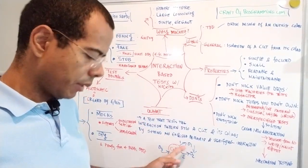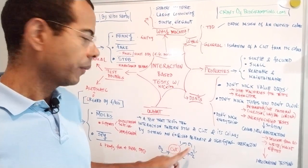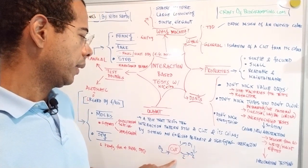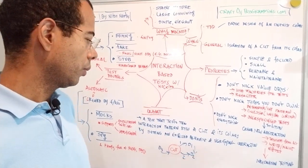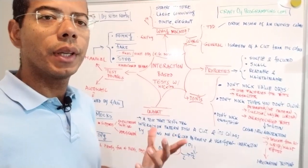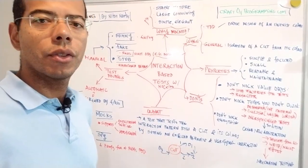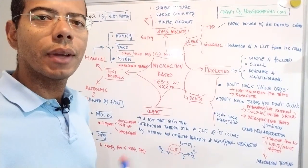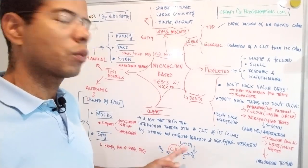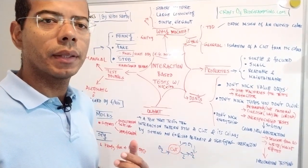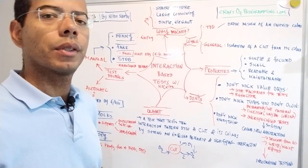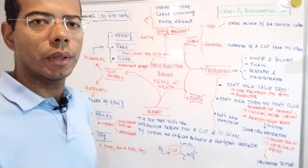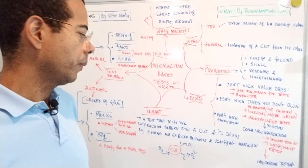So your component under test sends a message to object one, then object one sends a message to object two, and the component under test also sends a message to object two, which gets another message from object three. There is a bunch of exchanges of messages between a component under test and its immediate objects — called collaborators — and what interaction-based testing verifies is that these messages were sent in the order expected, as well as with the parameters and return types you set in your expected behavior.